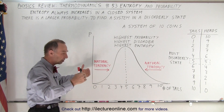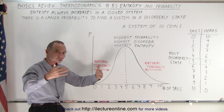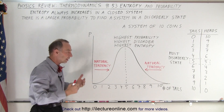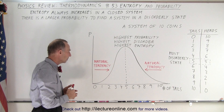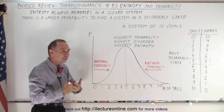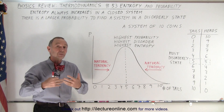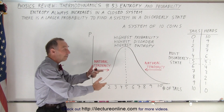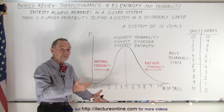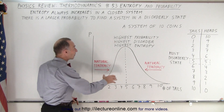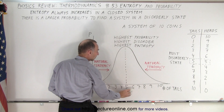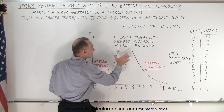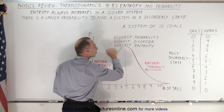Nature has it such that things tend towards that more likely scenario, that more likely state of the system. The most disorderly state is the most preferred state in nature. That most disorderly state is having 5 of one and 5 of the other — the highest probability, which is 5 and 5, is the highest disorderly state and therefore the highest entropy.